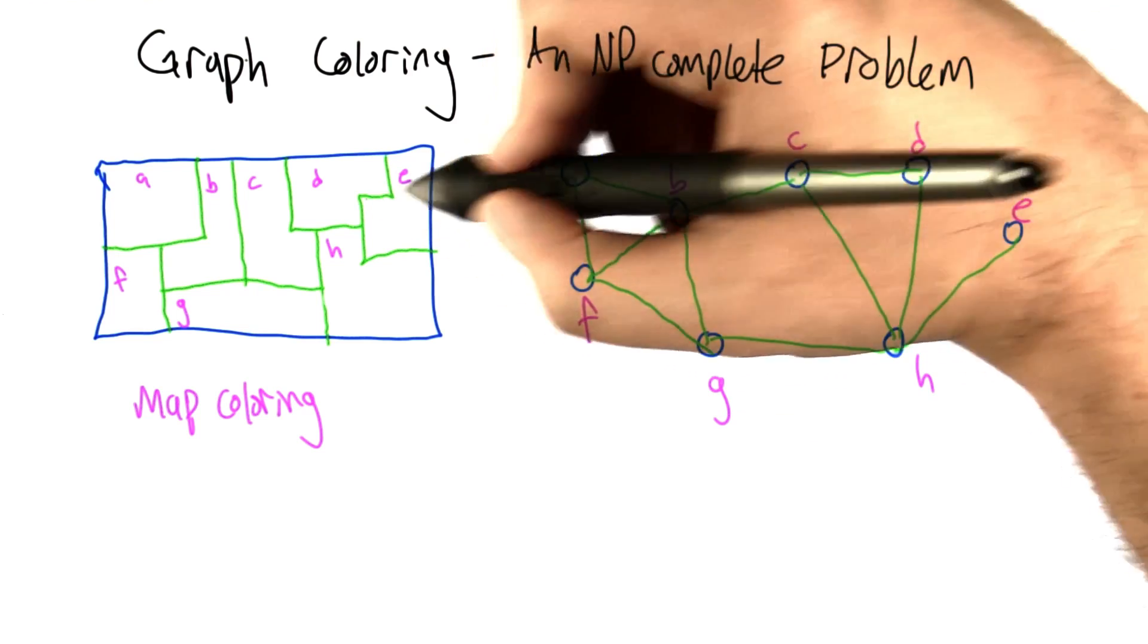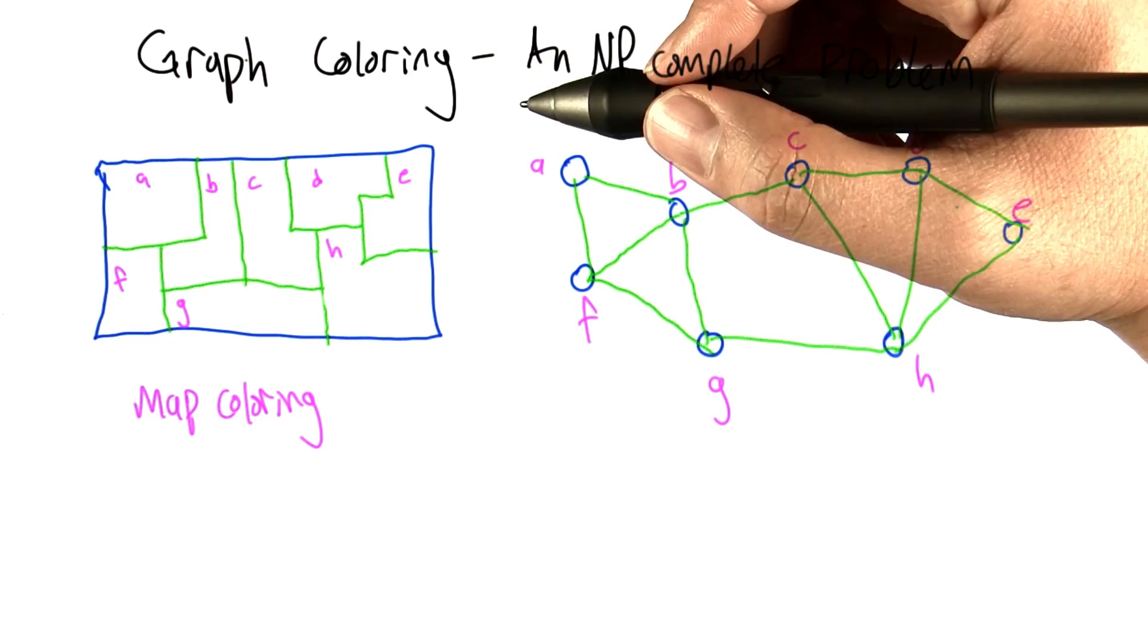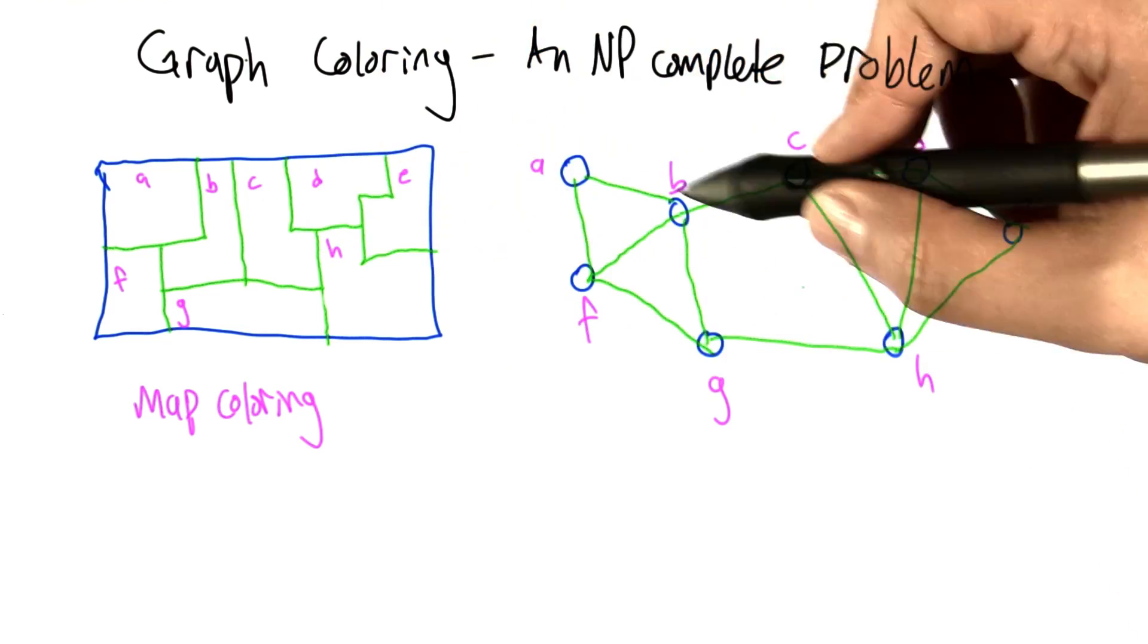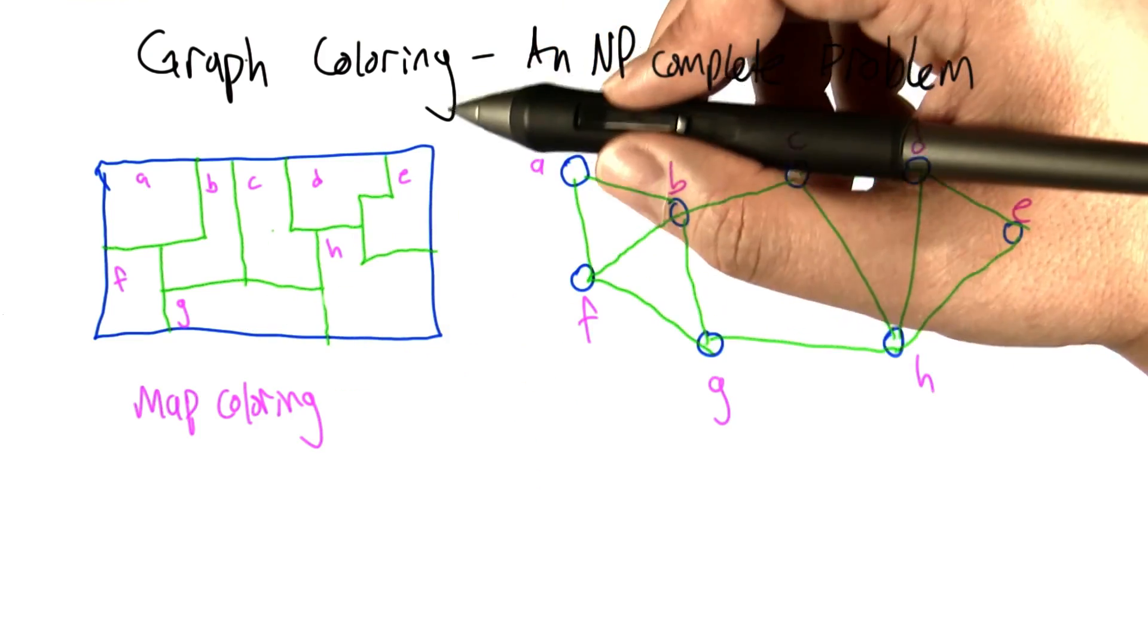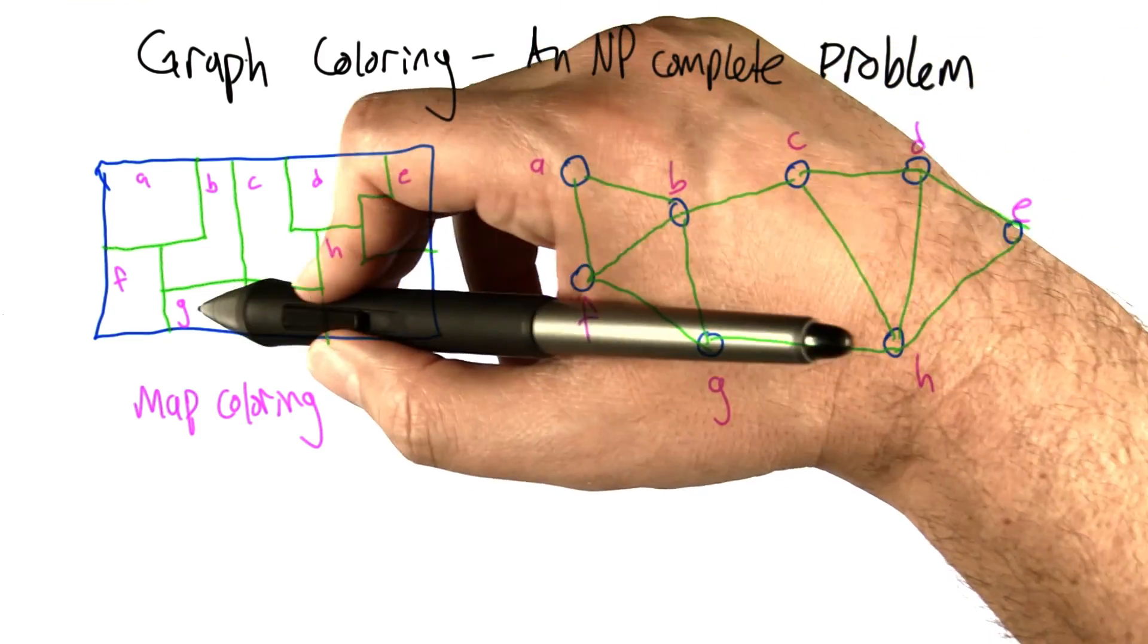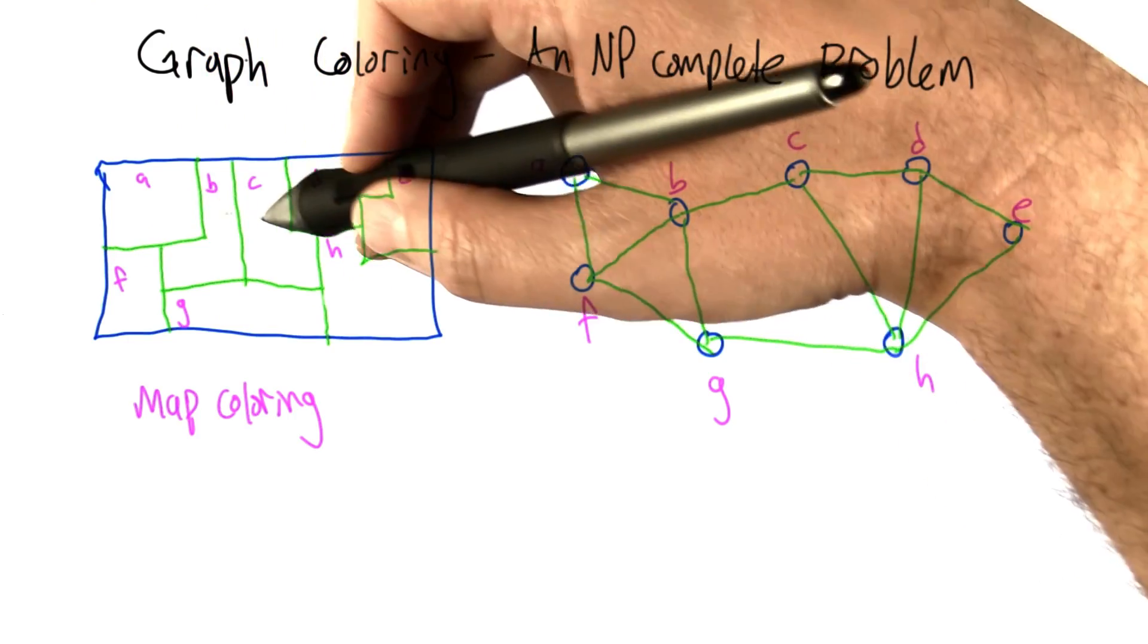D and E share a border. Did I get everything? H doesn't connect to B. G doesn't connect to C. Yes, it does. G has borders with F, B, C, and H.